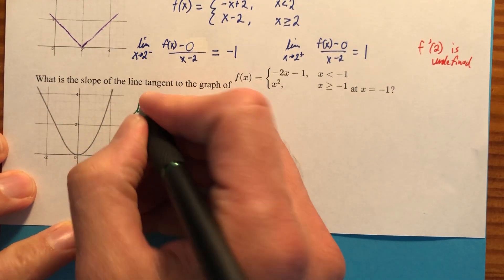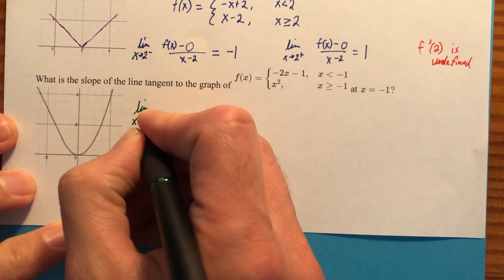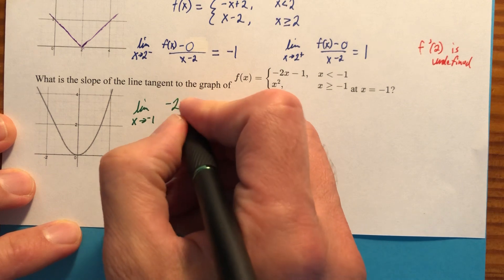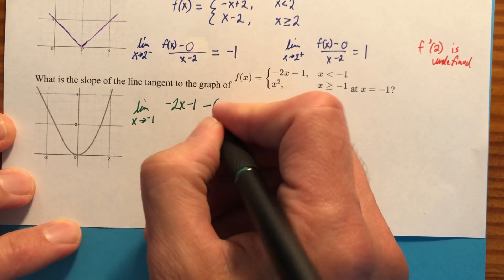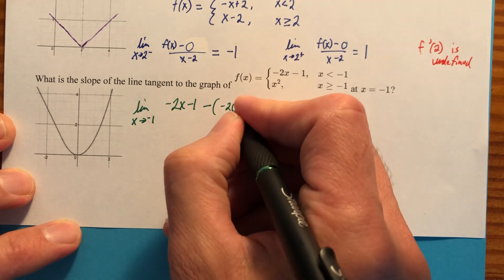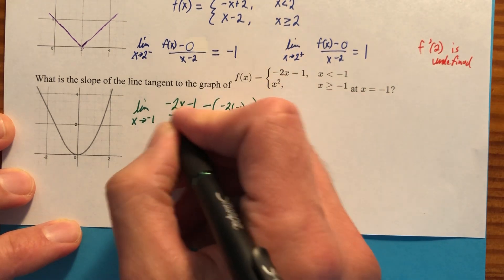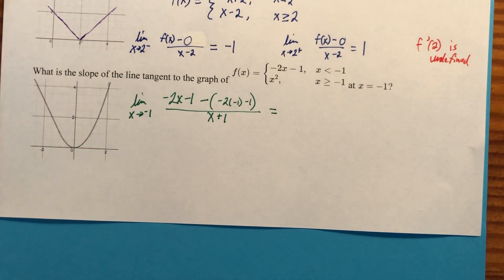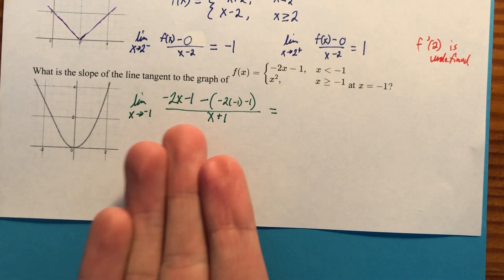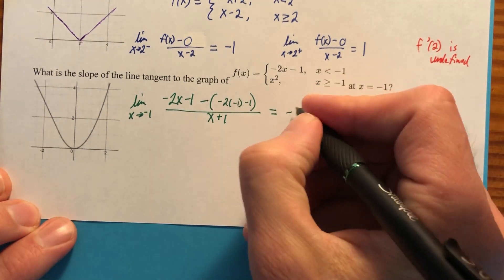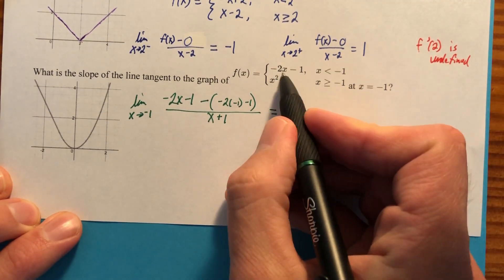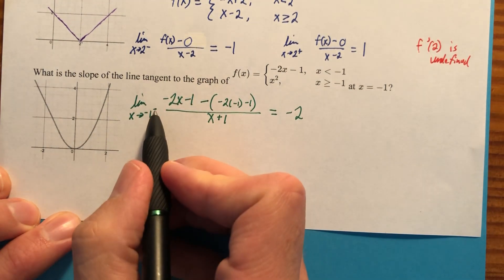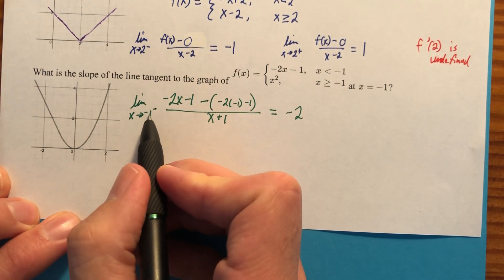And since it's piecewise, we're going to have to go from either side. So x approaches negative one from the left. So we'll have negative two x minus one minus, and then we're going to plug a negative one in here. So we'll have negative two times negative one minus one, all divided by x minus negative one. And I would love to waste your time working through all that, but this is asking for the slope on the left. That slope is negative two because we're looking at the equation of the line right there. Need to have a little minus there. I left it out earlier. X approaches negative one from the left.